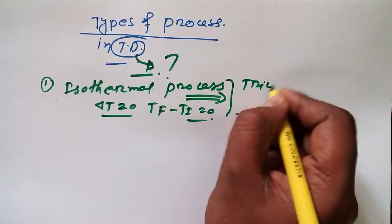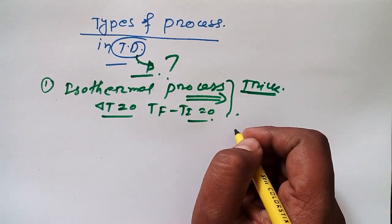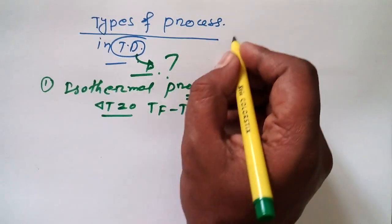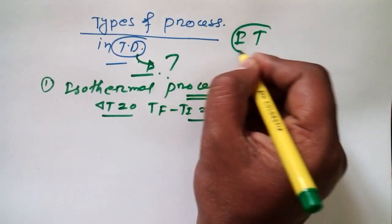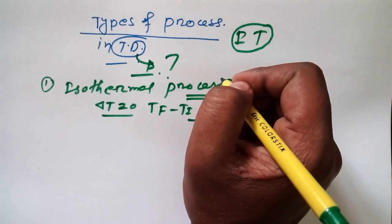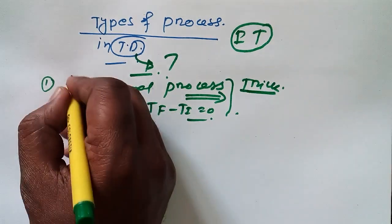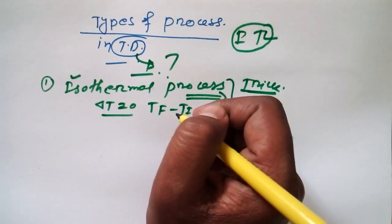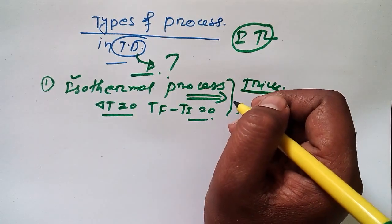Now, how to remember? I'm going to provide you a trick to remember. Probably you were studying engineering or maybe you have heard about a branch that is IT. The full form of IT is Information Technology. So I have remembered: I for isothermal, T for temperature.